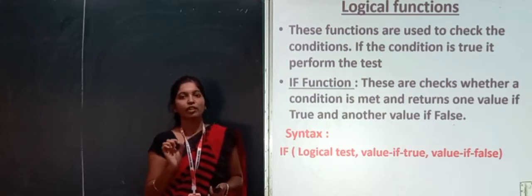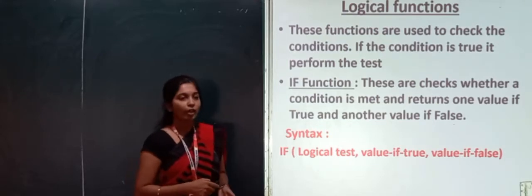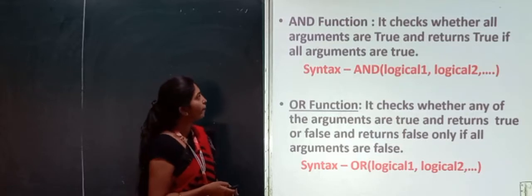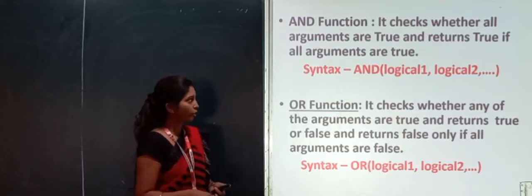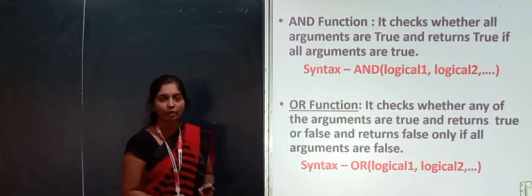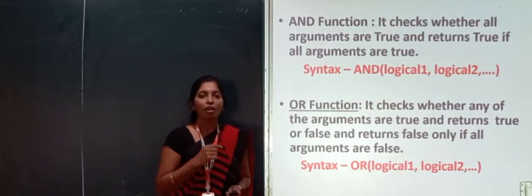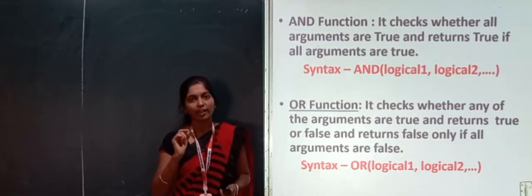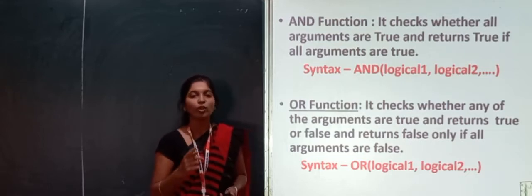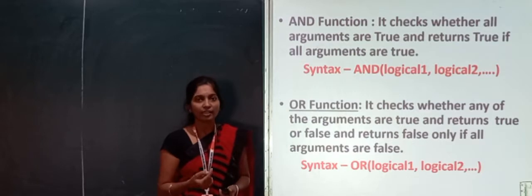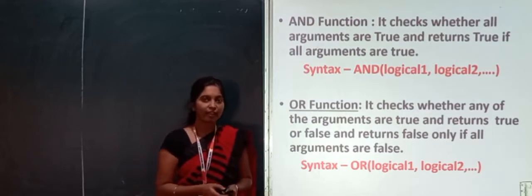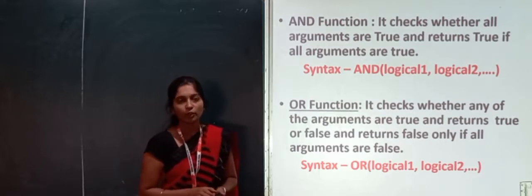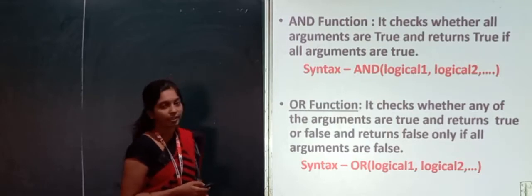The next function in logical functions is the AND function. It checks whether all the arguments are true and returns true if all arguments are true. If any one argument is false, it will provide the false answer. The syntax is: =AND(logical1, logical2).